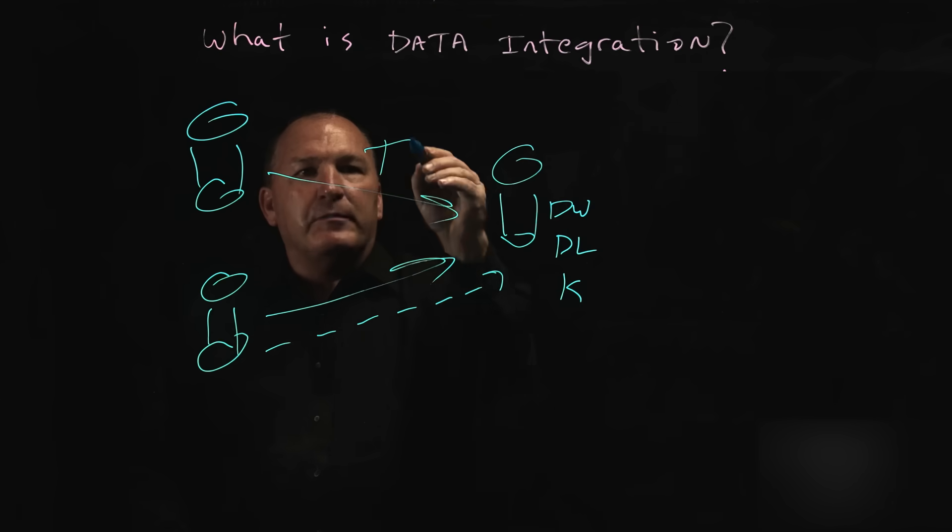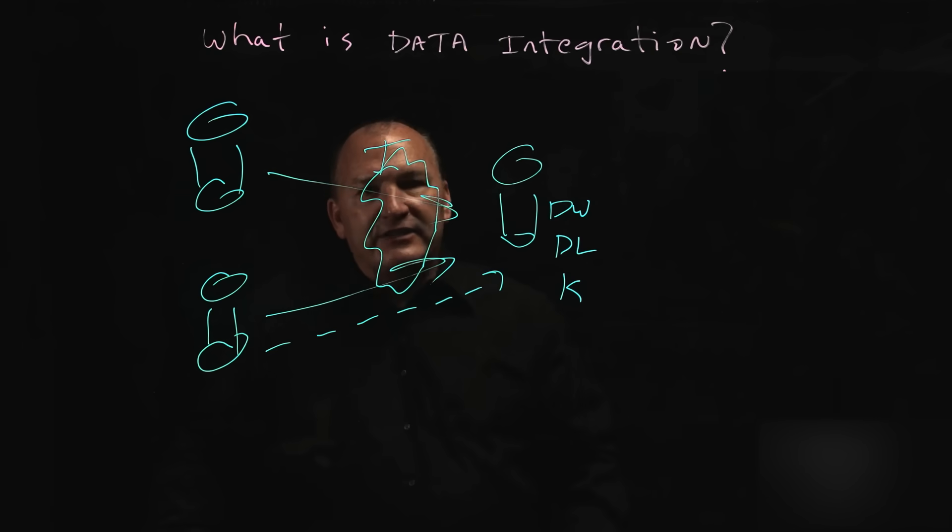The second piece is around the transformation. How do I automate this process of making this data standardized and clean and ready to be moved? Automating and taking an approach where I'm not hand scripting, I'm generating that code automatically, and I can even push that transformation code directly into my target system, like a data warehouse.